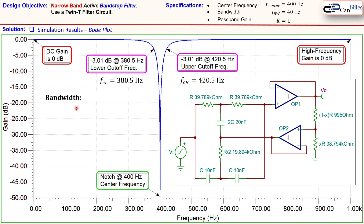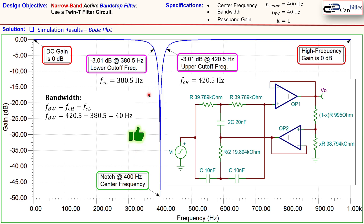The bandwidth is defined as the upper cutoff frequency minus the lower cutoff frequency, which gives 420.5 minus 380.5 equals 40 Hz, exactly as specified. So the design is verified using the SPICE simulations. If you have any questions please let me know. Don't forget to like and share these videos so we can reach more people for these interesting topics. Thanks for your cooperation and see you next time.